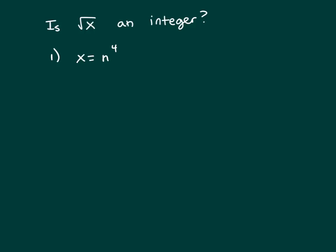Integers are positive and negative whole numbers, as well as 0. There's no fractions. So when you take this integer and you raise it to the 4th power, you still have an integer.